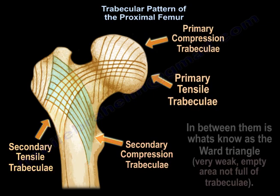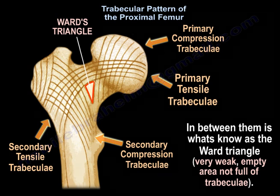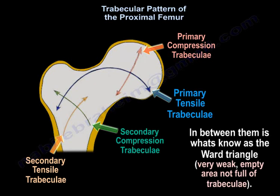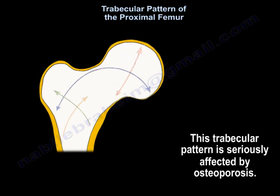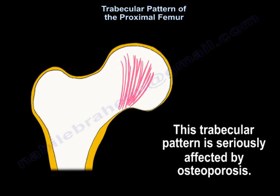In between them is what's known as the Ward triangle, which is a very weak area — it's an empty area, not full of trabeculi. This trabecular pattern can be seriously affected by osteoporosis.